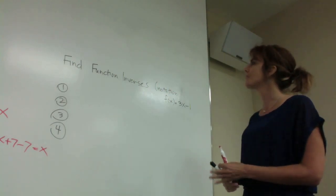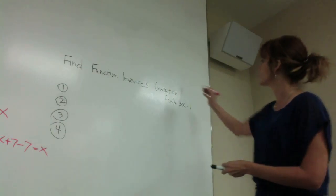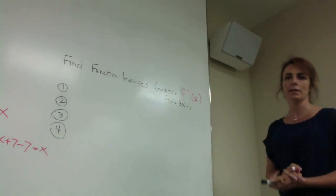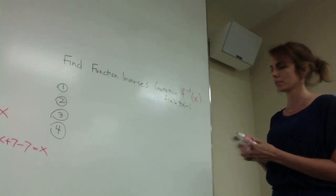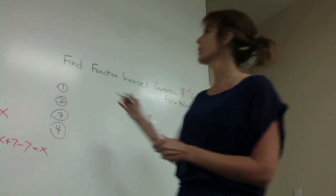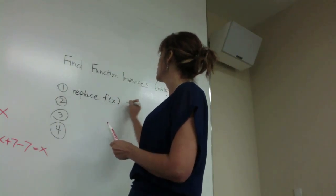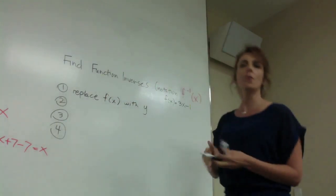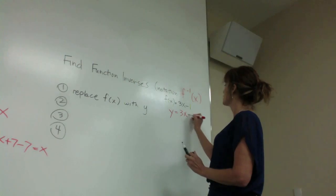So the last thing we're going to look at is finding the inverses of functions. One thing that you need to know is the notation of an inverse, which is f^(-1)(x). There's really four steps in finding the inverses of functions. The first step is we're going to replace f(x) with y. We know that y and f(x) are equivalent, so we're going to take whatever function we're trying to find the inverse of and replace f(x) with y.